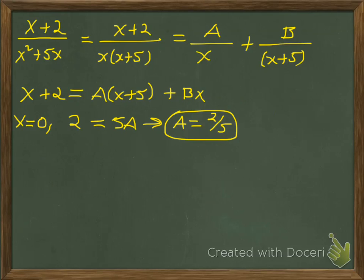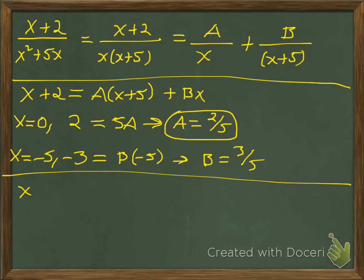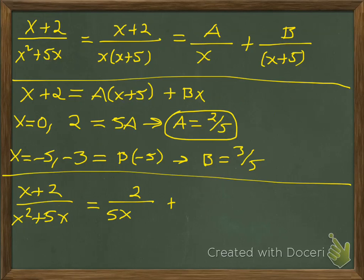That's one of the coefficients. For the second one, we pick a value that makes the factor attached to A equal zero, so we let x equal −5. Then 2+(−5) = −3, and that equals B times −5, since the A term drops out (because −5+5 = 0). Dividing both sides by −5 gives B equals 3/5. So we can rewrite (x+2)/(x²+5x) as (2/5)/x + (3/5)/(x+5).